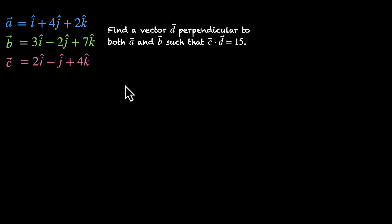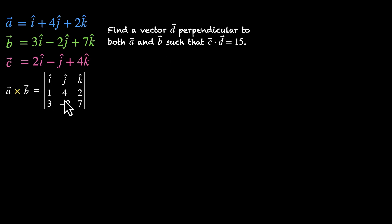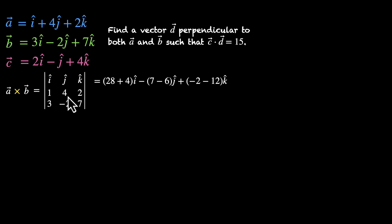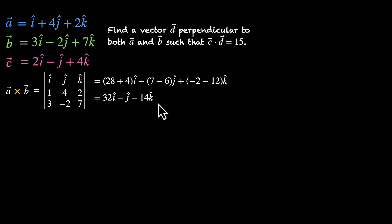We want to find a vector d perpendicular to both a and b, so the first thing to do is take the cross product of a and b. a cross b equals the determinant of i, j, k with components 1, 4, 2 and 3, minus 2, 7. Expanding: i times (28 plus 4), minus j times (7 minus 6), plus k times (minus 2 minus 12). So this becomes 32i minus j minus 14k.